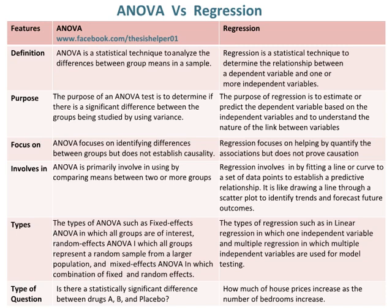The purpose of an ANOVA test is to determine if there is a significant difference between the groups being studied by using variance. Whereas, the purpose of regression is to estimate or predict the dependent variable based on the independent variables and to understand the nature of the link between variables.